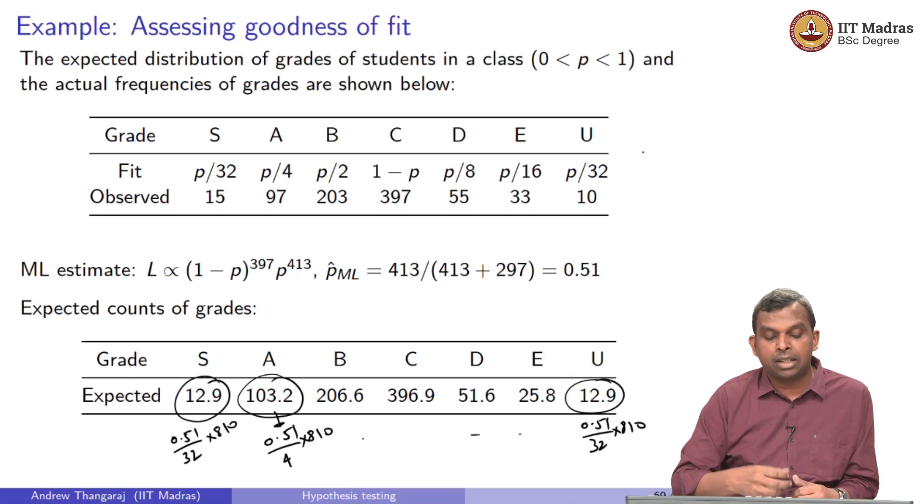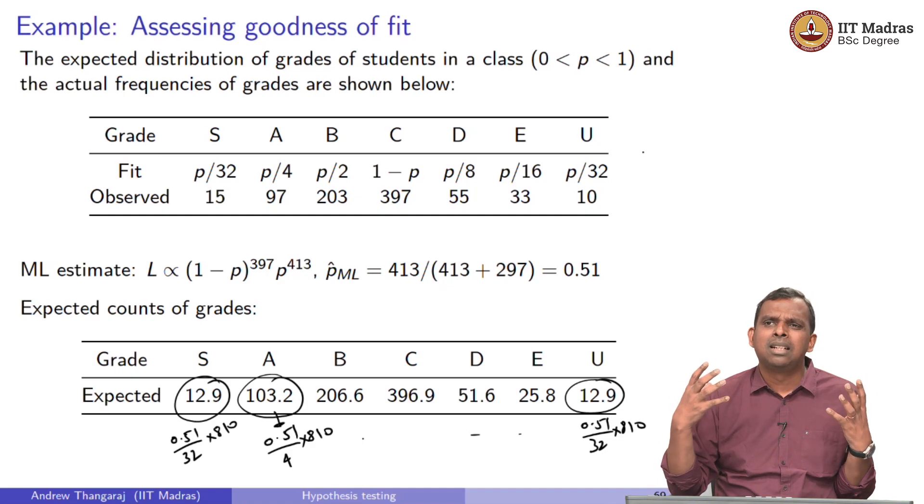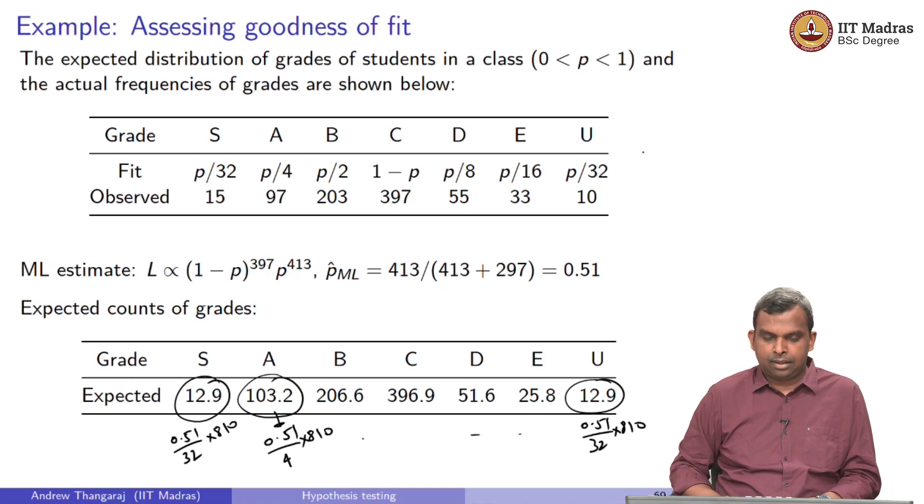As per that expectation, as I have estimated my P, I know the expected distribution and from there I can find the expected value. This is the count and that is observed. You see the observed numbers are 15 for S and the expected number is 12.9 as per my fit. The observed number is 97, the expected number is 103.2, 203, 206.6, 397, 396. These are the numbers I am getting. The question is, is this a good enough fit? Maybe you want some statistical analysis method, some p value, maybe some significance level, to come up with a test to see if this is a reasonable fit or not. This is a typical statistical problem.